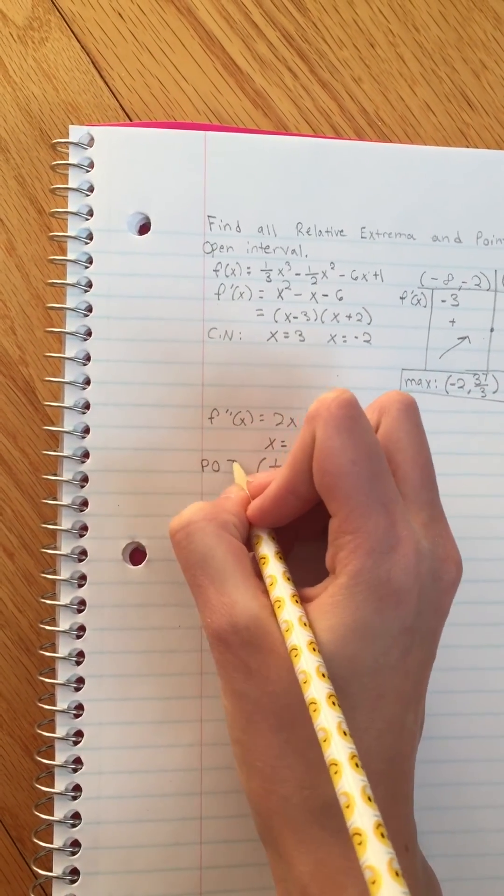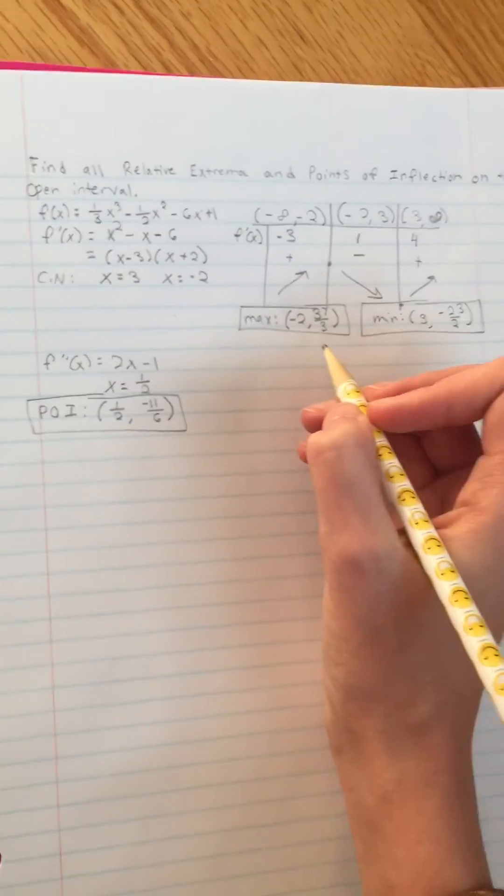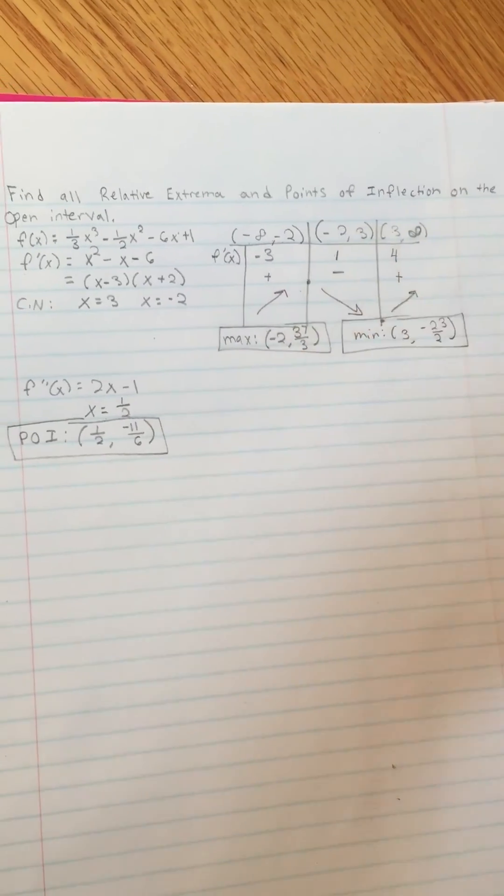And that right there is your point of inflection. You only have one. So that's it. You have points of inflection, you have your extrema, and that's all you really need.